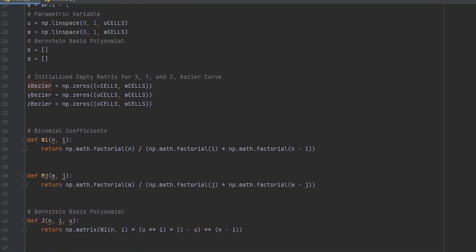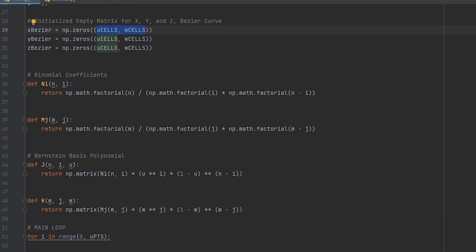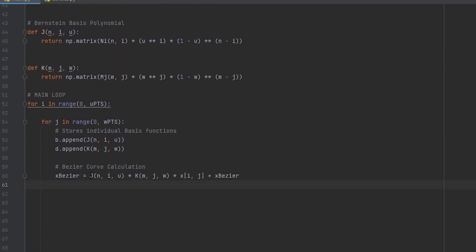Also remember that x Bezier has a size depending on the cells we chose so in our case it would be a 10 by 12 array J has a size of 1 by 12 and K has a size of 1 by 10 the multiplication has to result in a 12 by 10 matrix and we can do that by transposing the J array into a 12 by 1 if you remember matrix multiplications now the multiplication will result in a 12 by 10 which is exactly what we want.